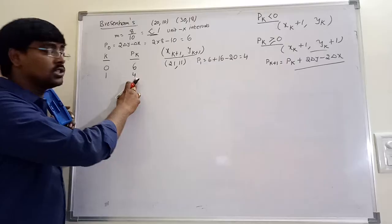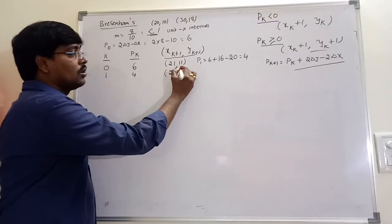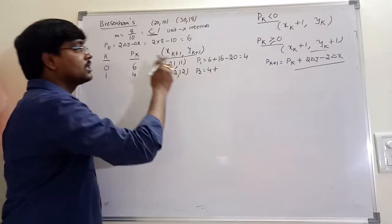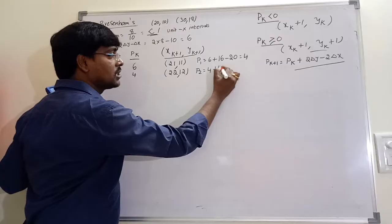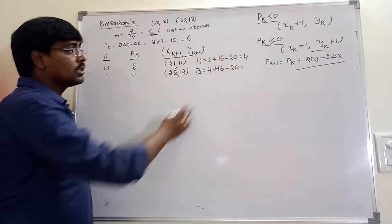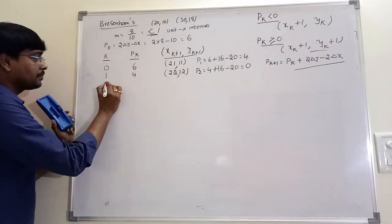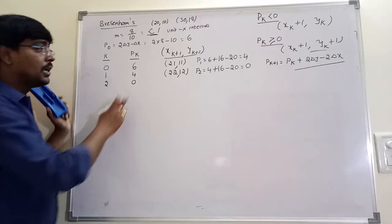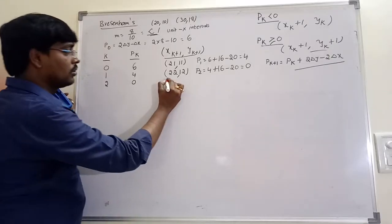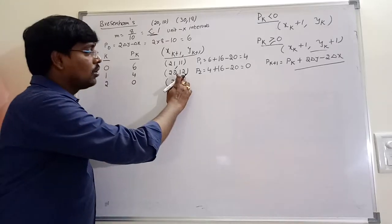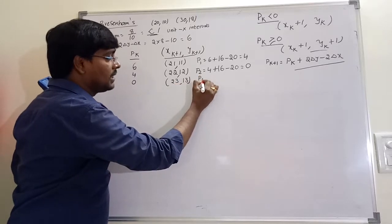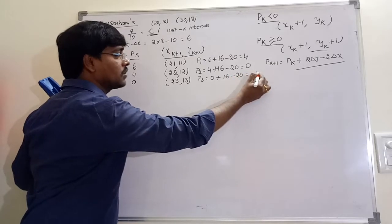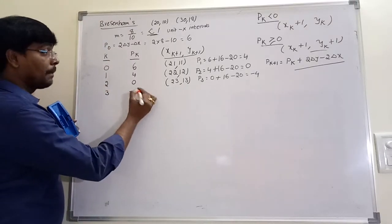Again, pk value is greater than 0 means the next y coordinate is incremented by 1. P2 equals p1 plus 2 delta y minus 2 delta x, that is 16 minus 20. So total is minus 4 plus 16 minus 20 equals 0. K=2, p2 equals 0. Since p2 is greater than or equal to 0, x coordinate is incremented and y coordinate is incremented by 1 to 13. P3 equals 0 plus 16 minus 20, that is minus 4.